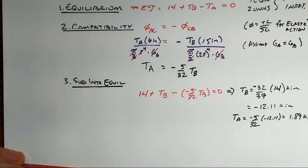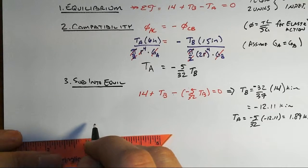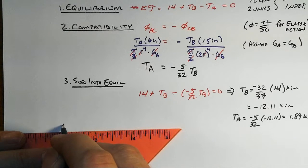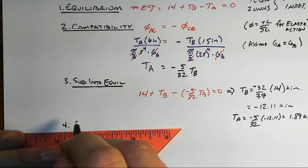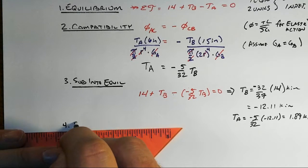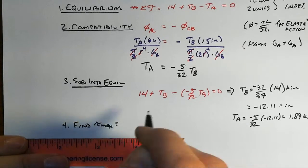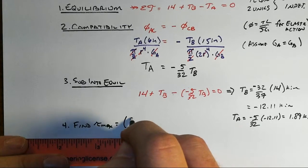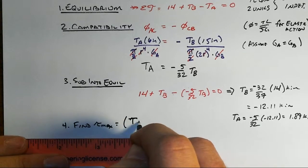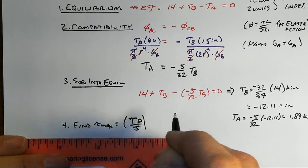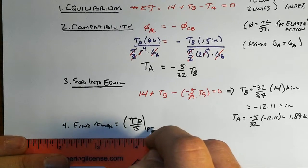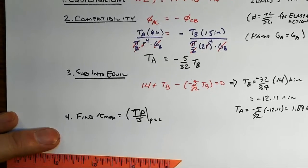So now we have the two torques, we can now apply our shear stress model for twisting of a circular shaft to find tau A max, which of course will be where that is maximized, which is at rho equal to C, or really rho equal to R.